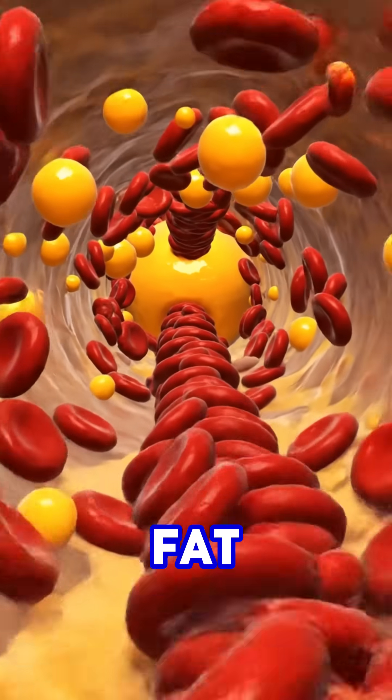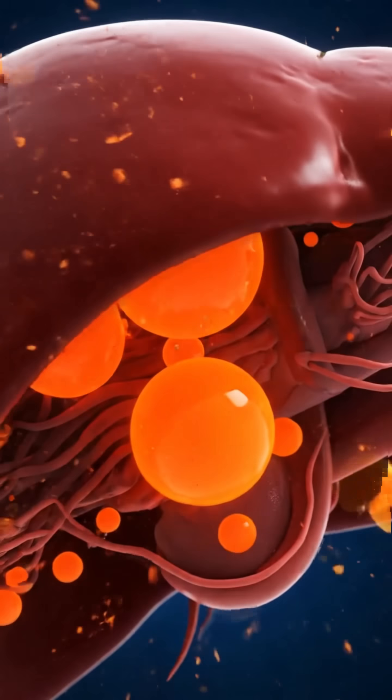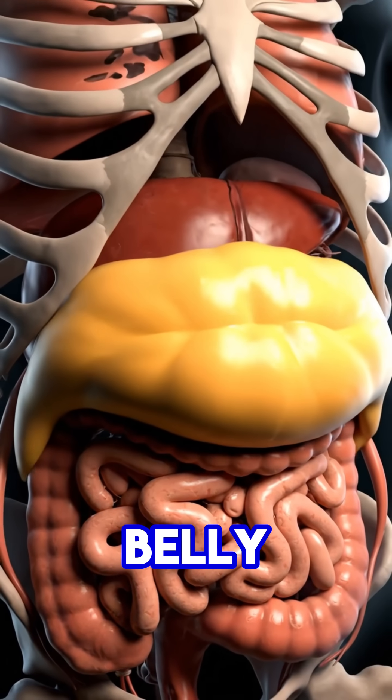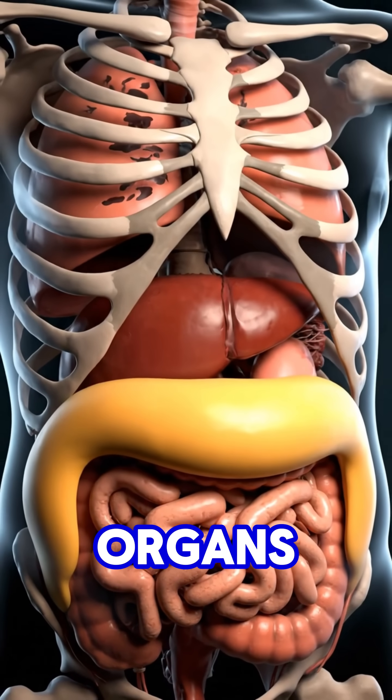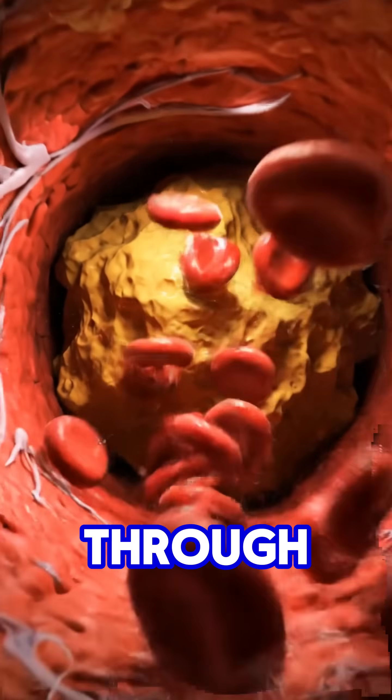Fat slows down your circulation like a traffic jam. Your liver is drowning in grease, working overtime to process the overload. Inside your belly, fat starts crushing your organs, leaving less room to breathe. Even your heart struggles, pumping through narrow arteries blocked by fat.